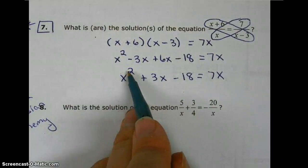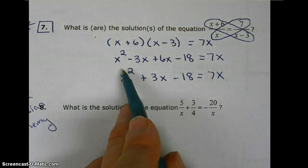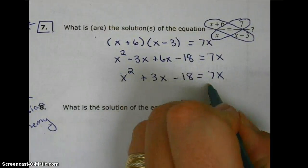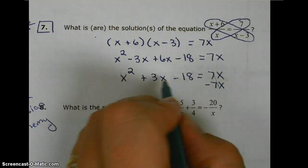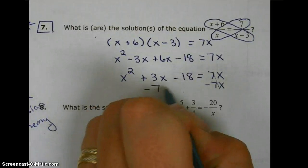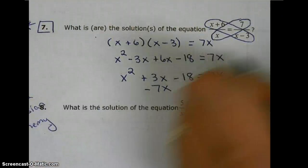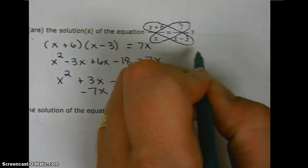Now, since it is quadratic, because it is to the power of 2, we're going to set the equation equal to 0. To do that, we have to cancel out the 7x. So we're going to end up with, let's move over here,